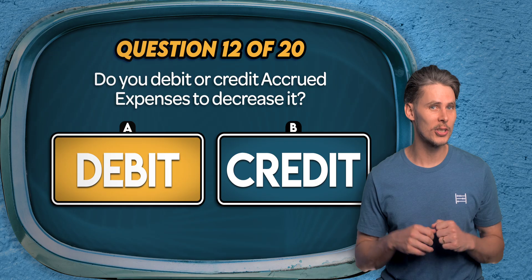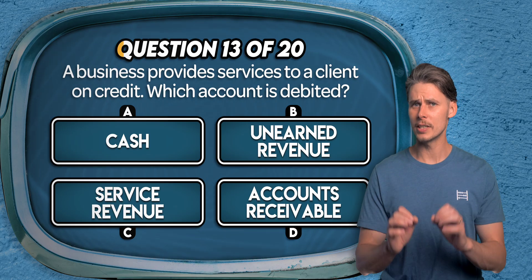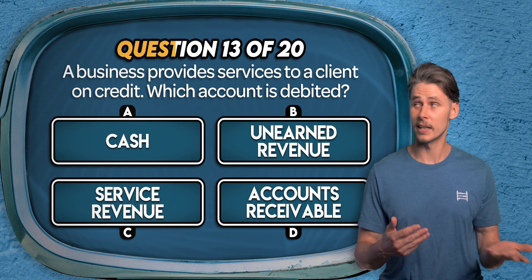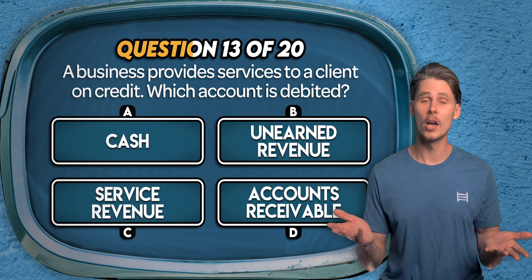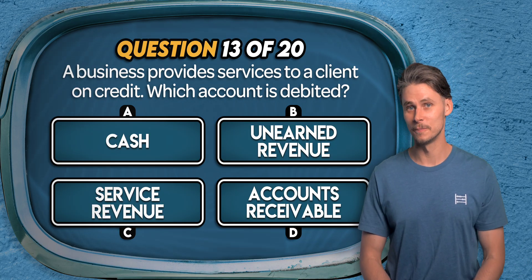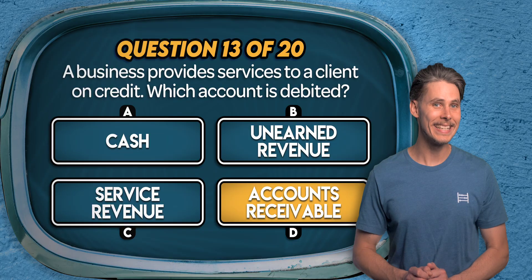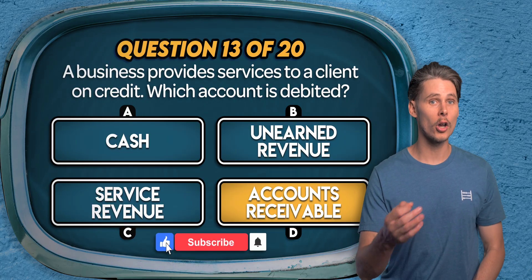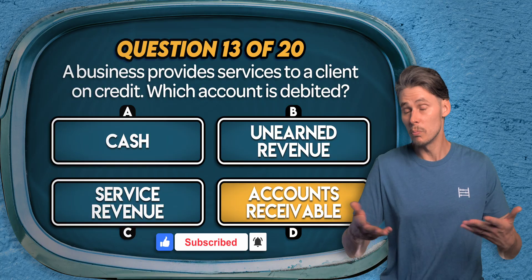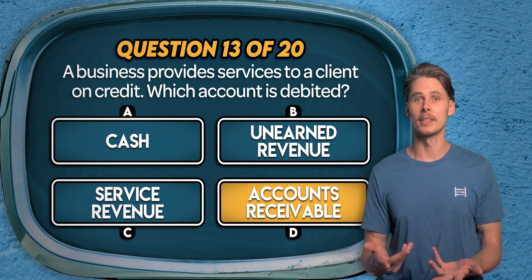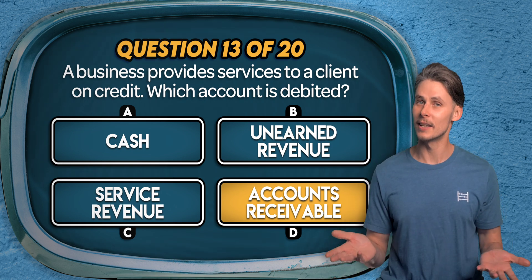Now that we've covered the foundations, let's work with some scenarios. Question 13. A business provides services to a client on credit — which account should they debit? Is it cash, unearned revenue, service revenue, or accounts receivable? The answer is D — accounts receivable. When services are provided on credit, the client owes the business money, so accounts receivable, an asset, is debited. The other side is a credit to service revenue to recognise the income earned.